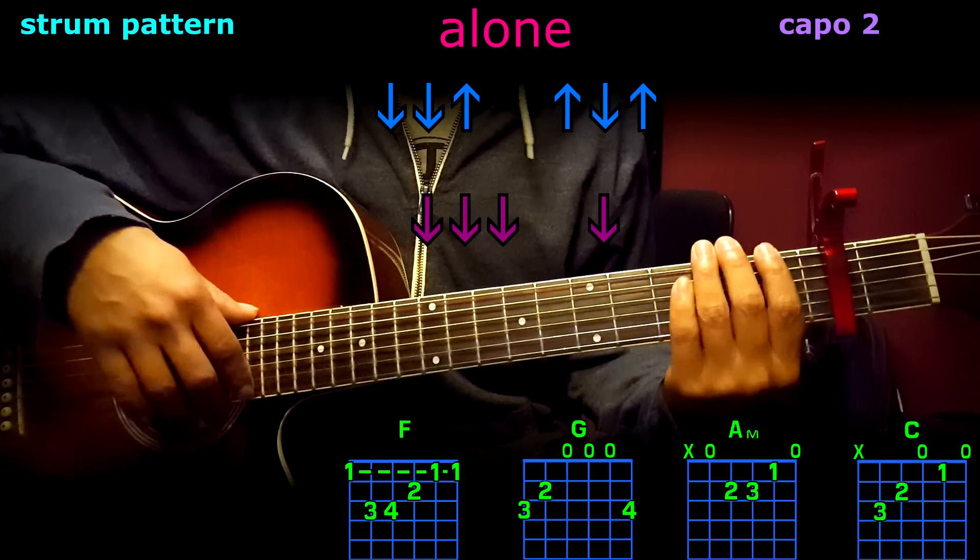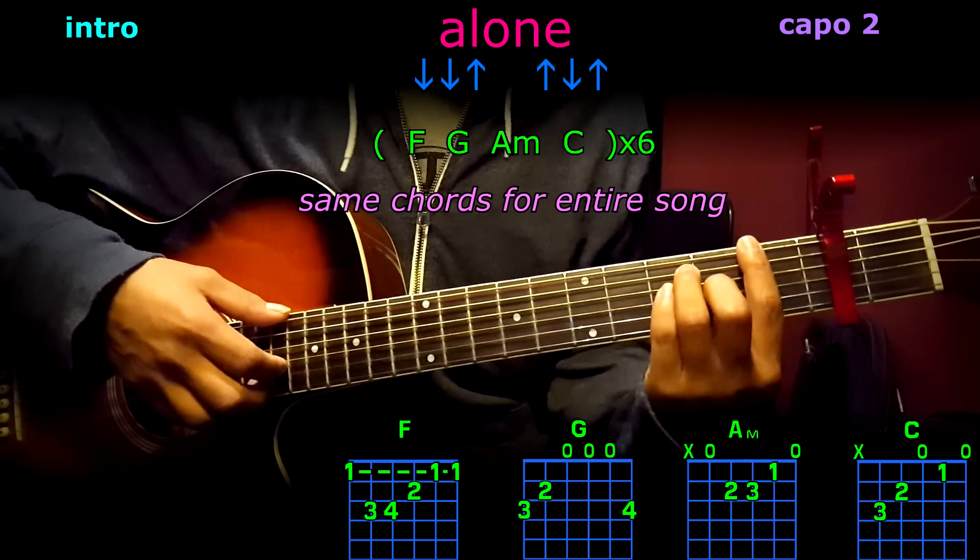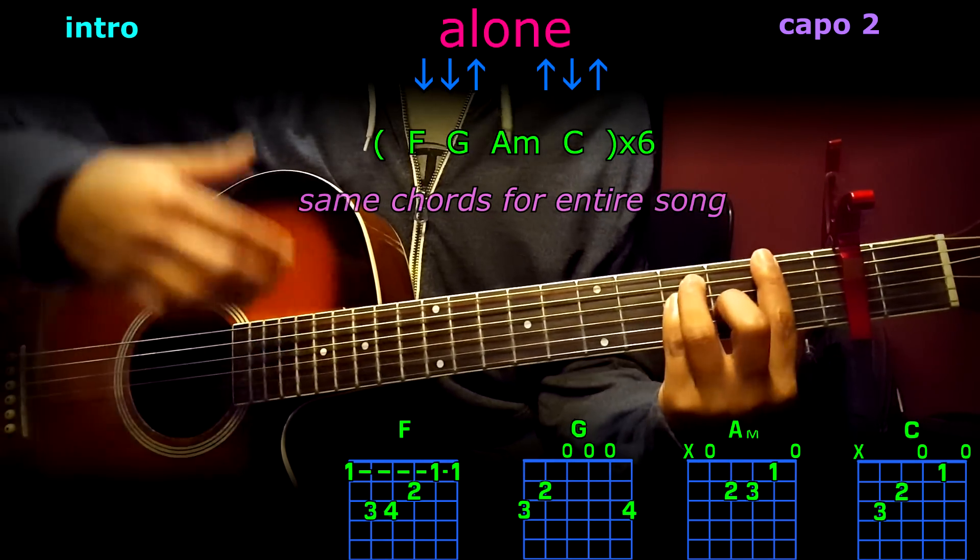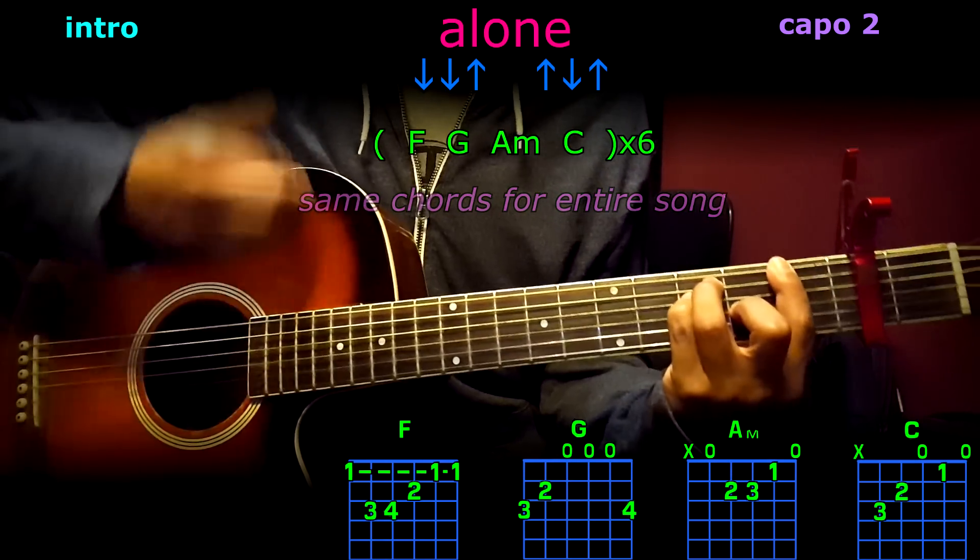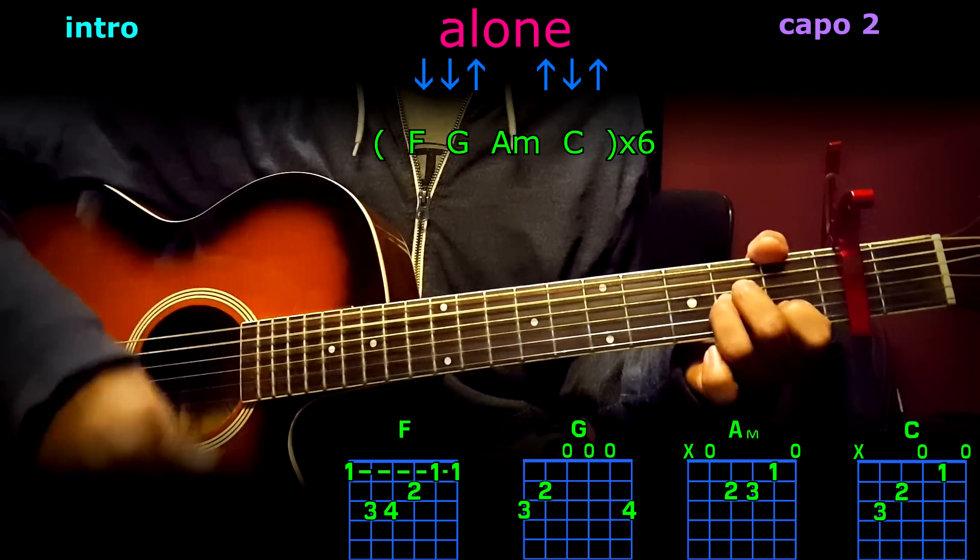Now you should be able to play this whole tune with the first pattern: F down, down, up, up, down, up, G, A minor, C.